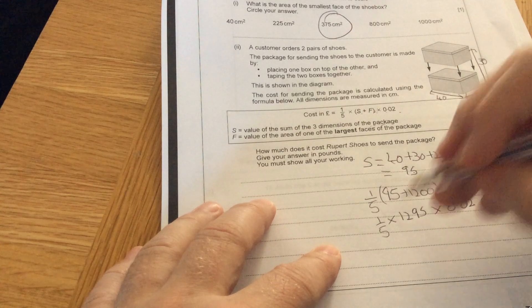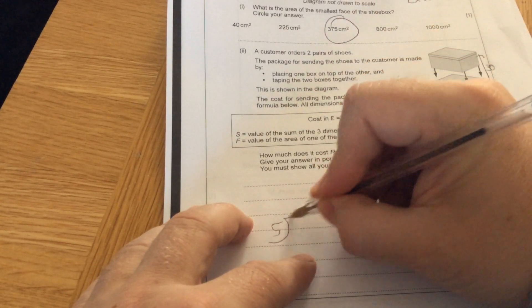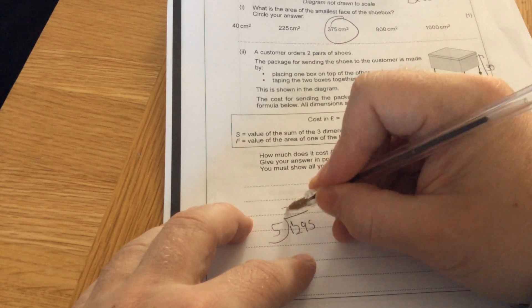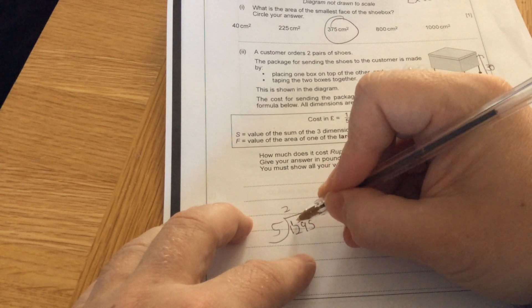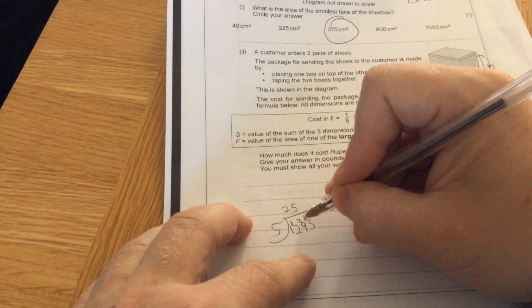A fifth of 1,295. You divide by the bottom. How many fives in 1,295? 5 into 1 don't go. 5 into 12 twice, 2 left over. 5 into 29, 5 fives are 25, 4 short. 5 into 45. So it's 259.